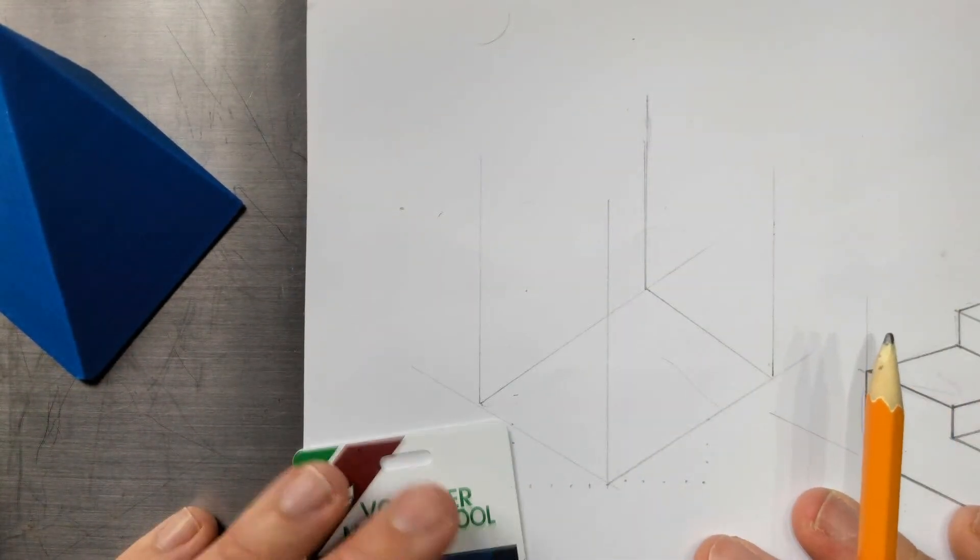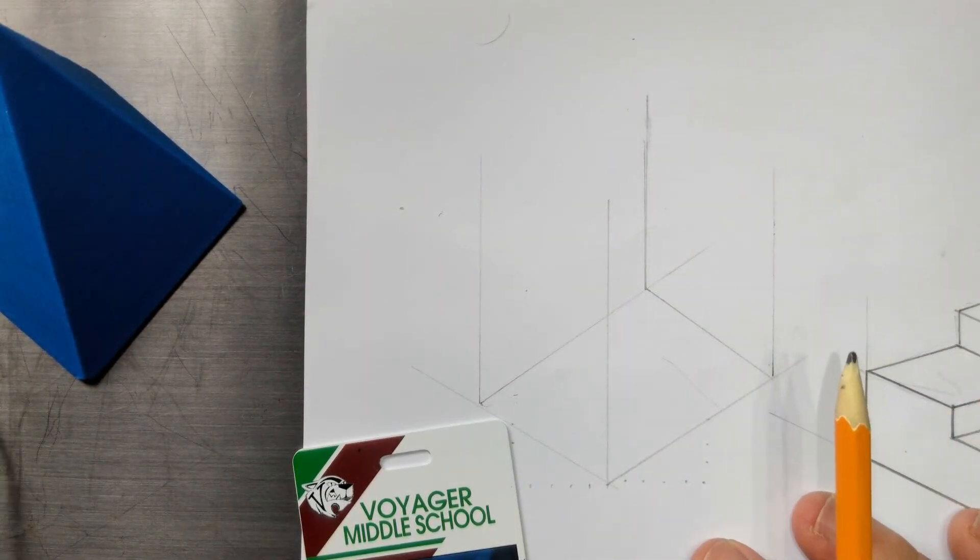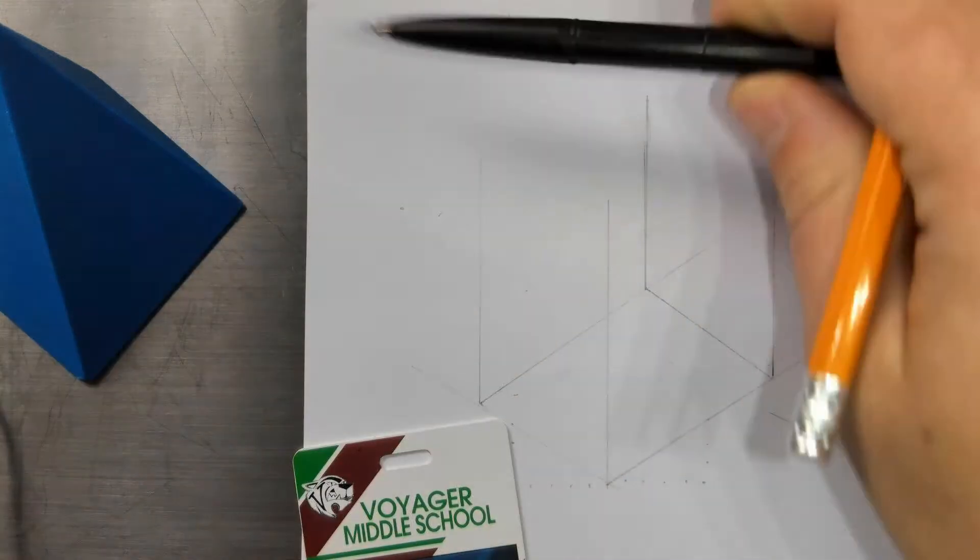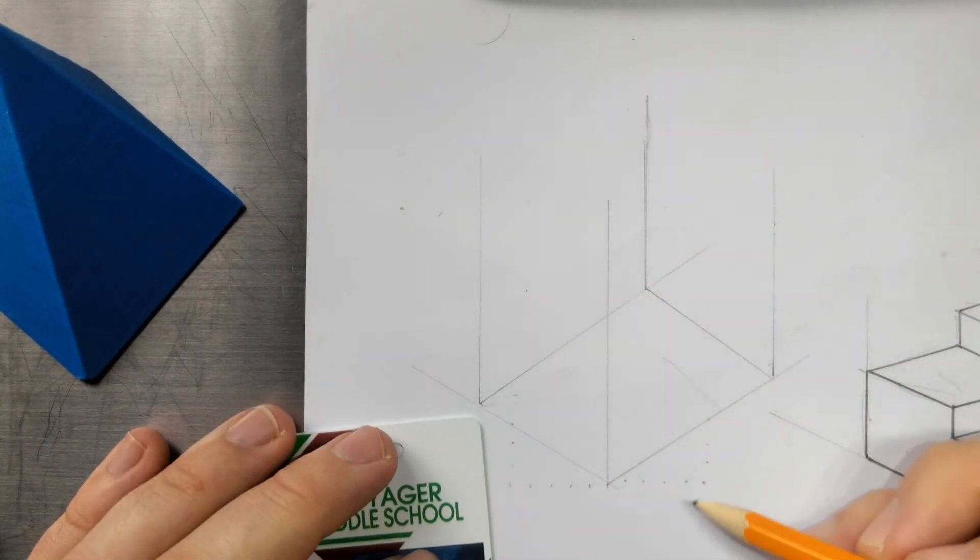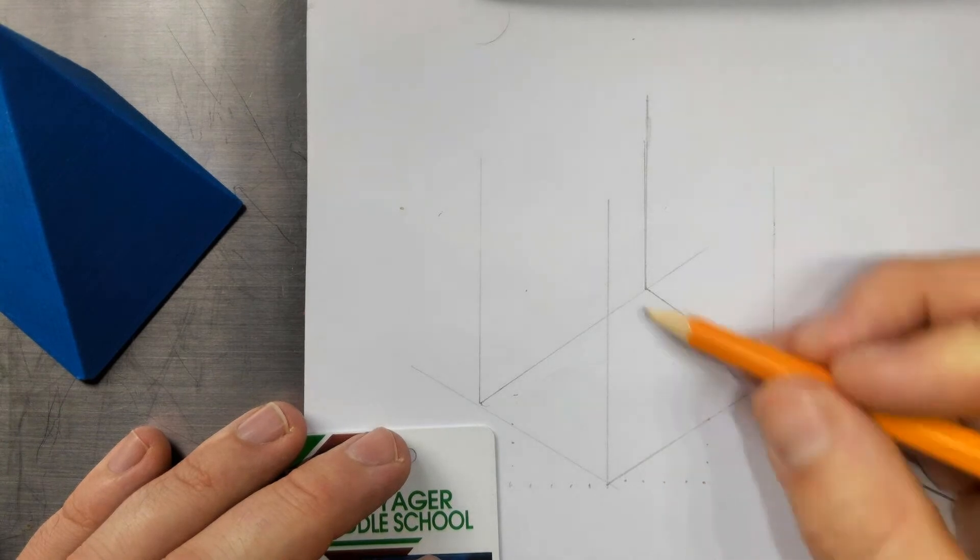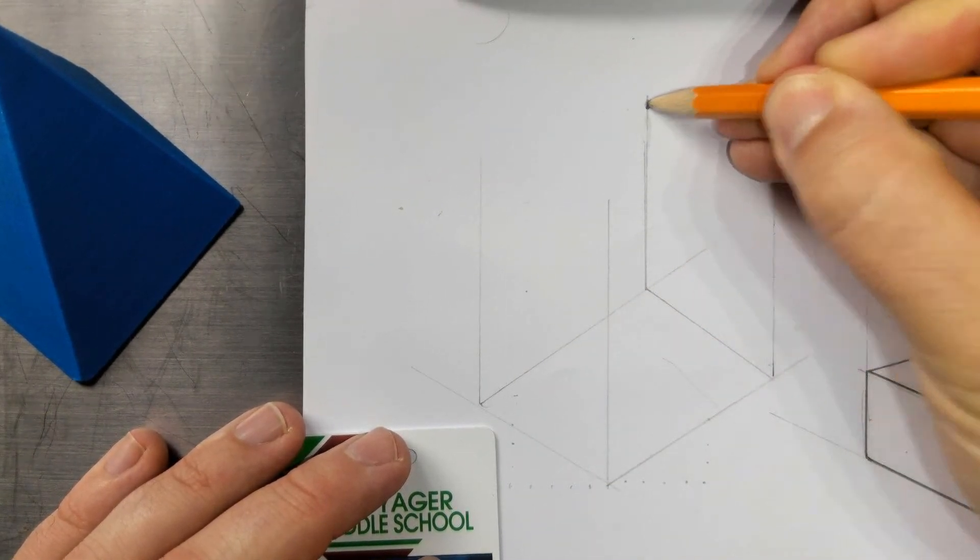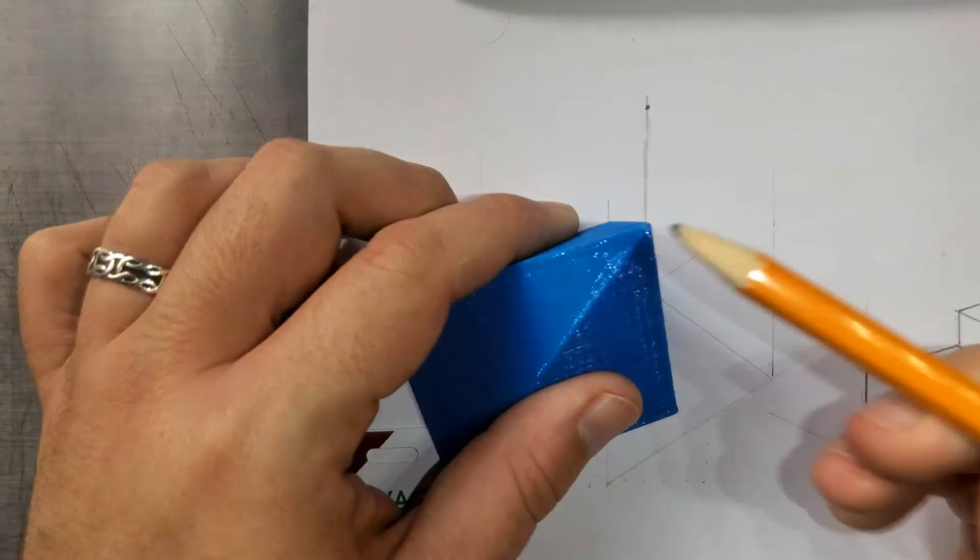So all of these are construction lines so you might want to have a pen handy so that you can darken up your lines or a sharpie even I'm gonna grab my pen here. But I will see this line right here and this line right here and then up here there's gonna be some point and I'm gonna pick it that's gonna be my point that's the tip of the pyramid.